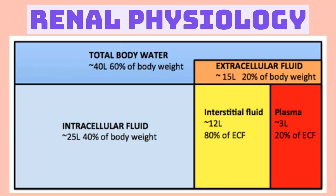How many liters of isotonic saline would you have to infuse to get one liter into the plasma? The answer is three. Because of the two-thirds/one-third relationship: two of those liters would end up in the interstitial space, and only one would end up in the vascular compartment. That's why in hypovolemic patients you need to really infuse isotonic saline — it equilibrates with the interstitial fluid compartment. They've actually asked that on boards.